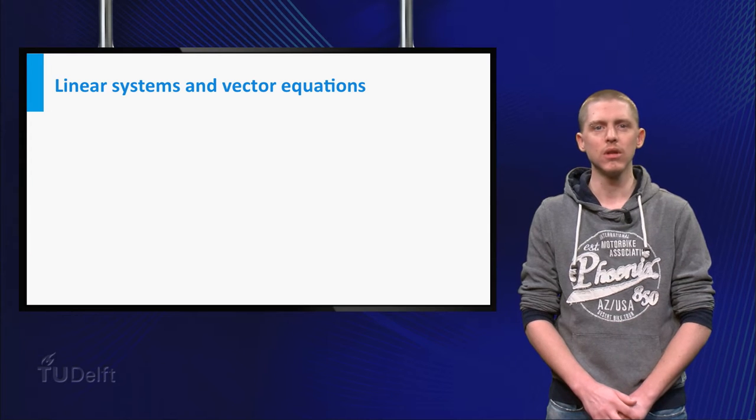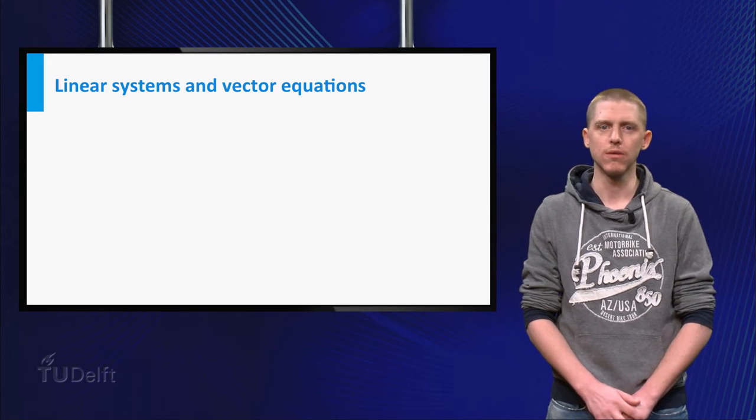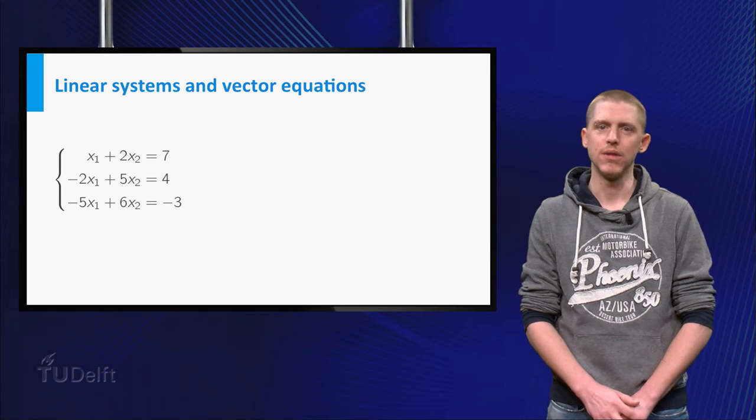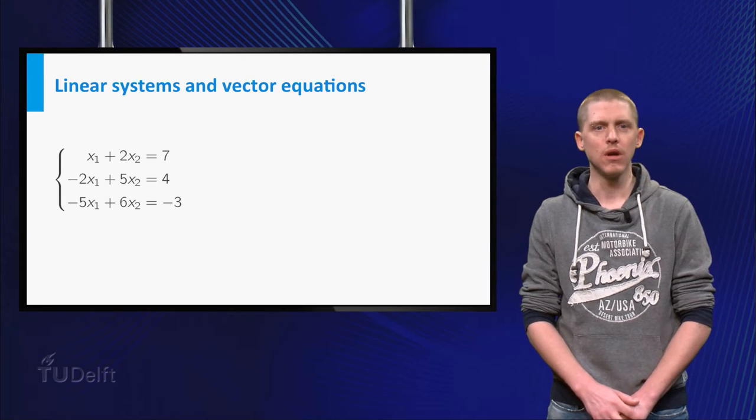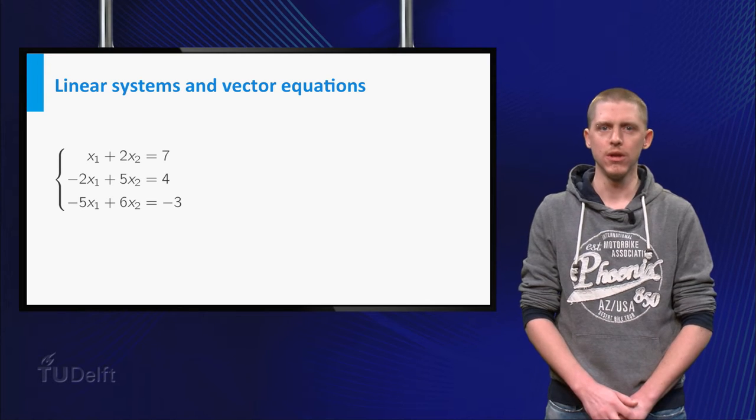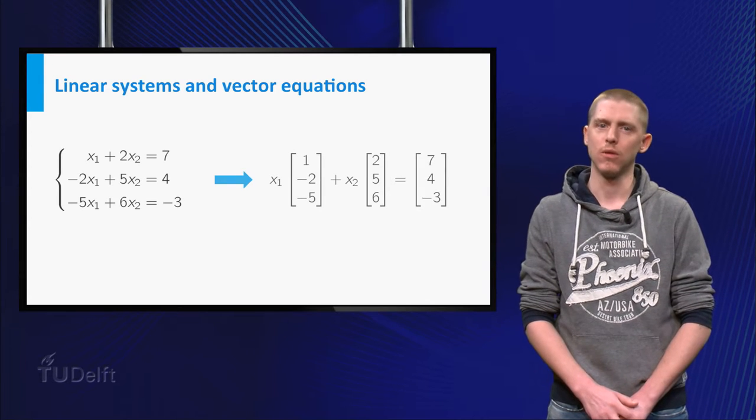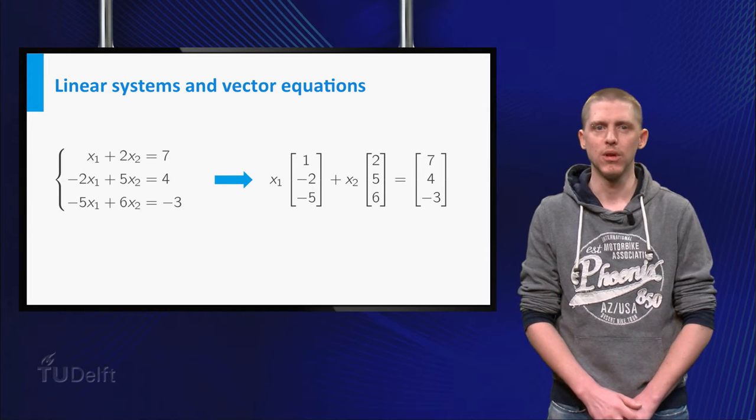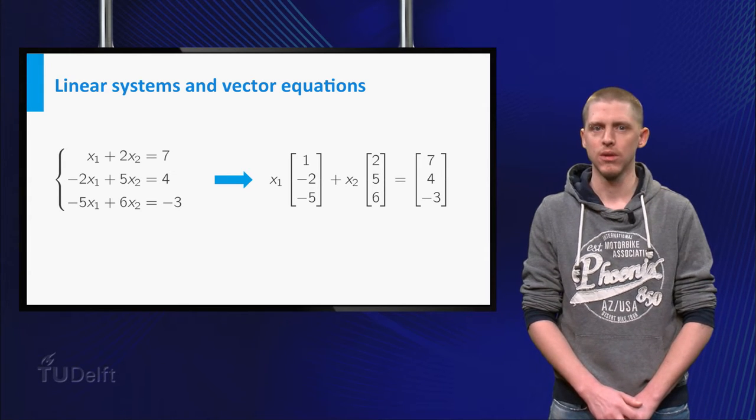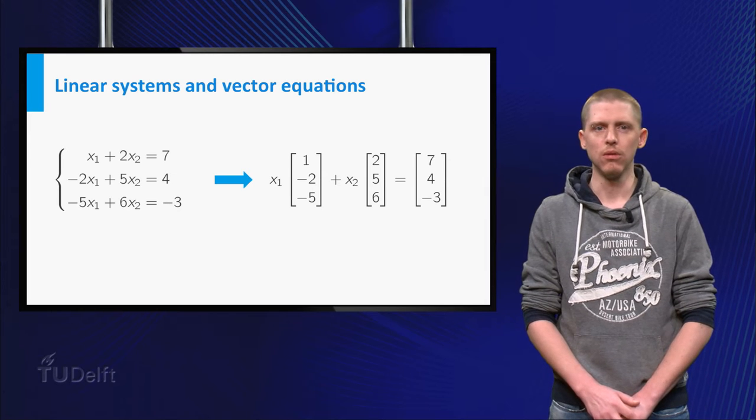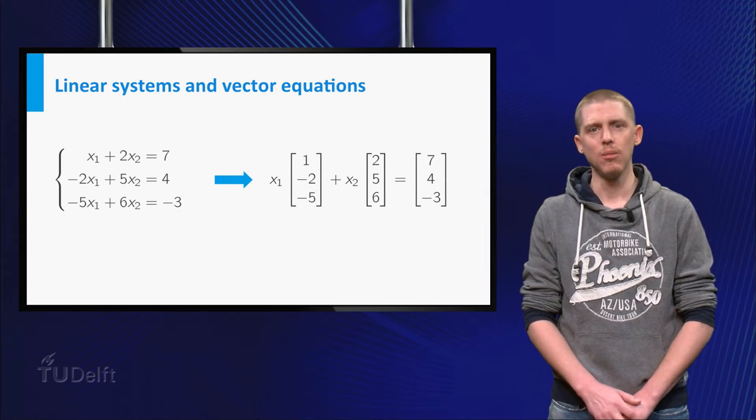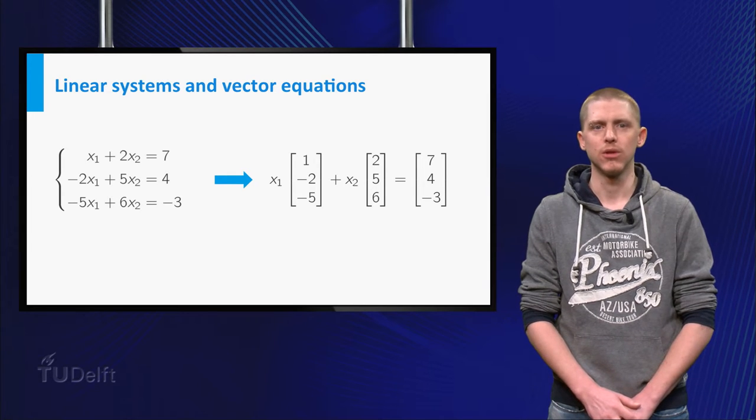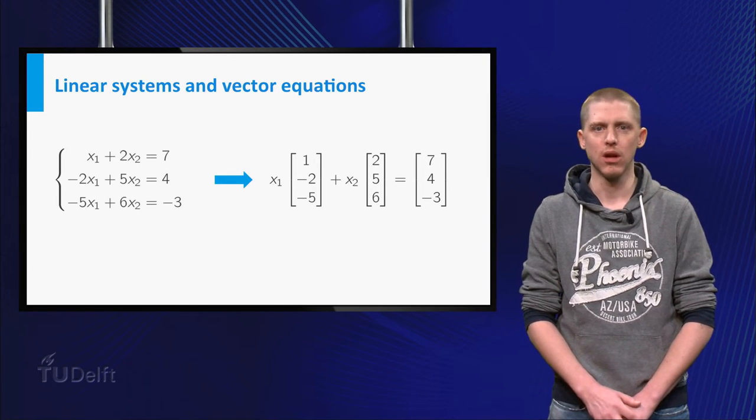Until now we have looked at linear systems by reading each of the equations horizontally. Have another look at this system. You have enough knowledge about vectors in R3 to write this system in the following alternative way. In this way the linear system has become a so-called vector equation. Can you do this in general for any system of m equations in n variables? Of course you can, but to be able to do this we need to extend our concept of vectors.